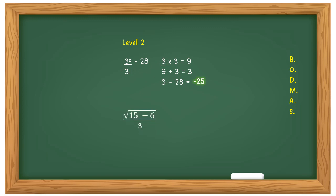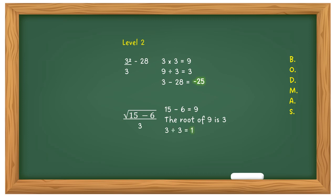Here's another Level 2 question: find the square root of (15 minus 6), all over 3 — the dividing line is the fraction bar. You have an occurrence so solve the top part first: 15 minus 6 is 9, and the square root of 9 is 3 because 3 times 3 = 9. Then 3 divided by 3 is 1. Although it looks complex, it's quite easy to solve if you follow the BODMAS rules to the letter.